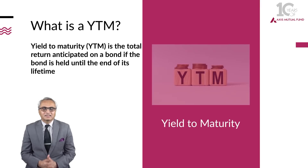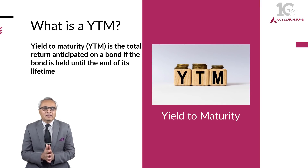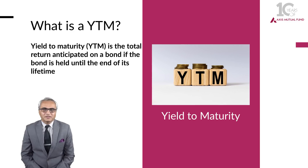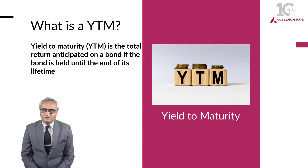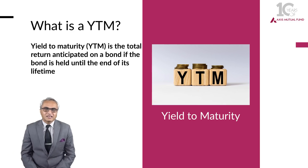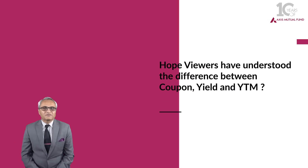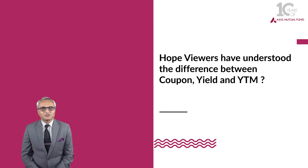Yield to maturity, for anybody, is from the time of investment — if you hold that particular paper till its maturity, whatever yield you captured at the time of investment will become your yield to maturity. For the original investment, that 10% coupon, if held for 5 years, yield to maturity will be 10%. If in the secondary market somebody bought it at a 9.09% yield and holds it for the balance residual maturity of 3 or 4 years, his yield to maturity will be 9.09%. I hope viewers have understood the difference between coupon yield and yield to maturity.